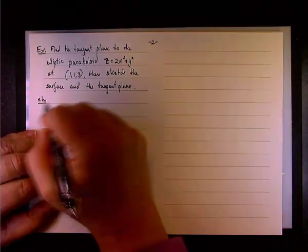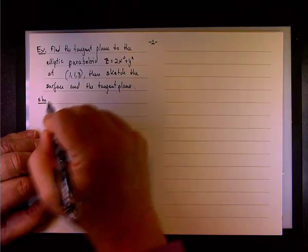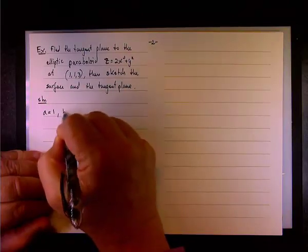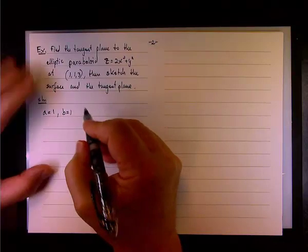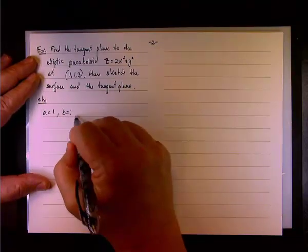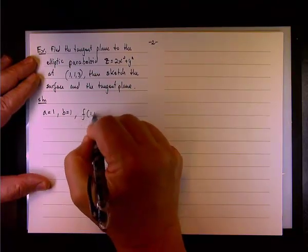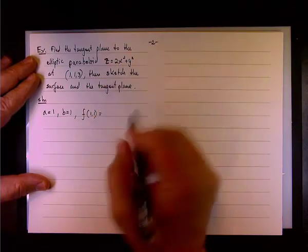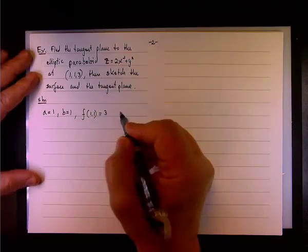Adam already demonstrated. So we let a equals 1 and b equals 1, and f of 1, 1, of course is z, so 2 times 1 plus 1 is 3, like so.